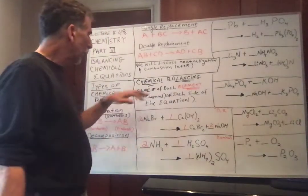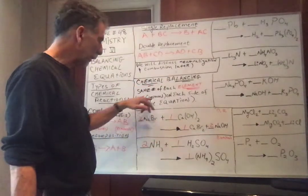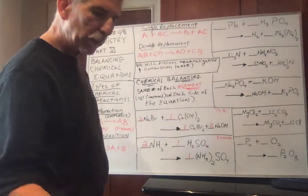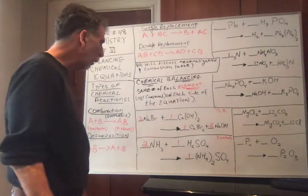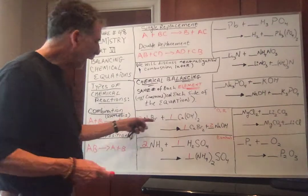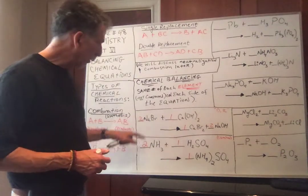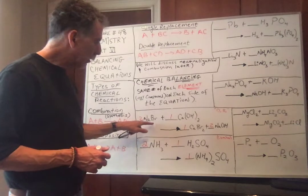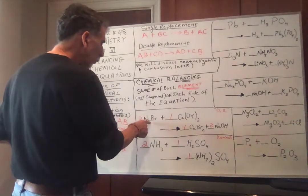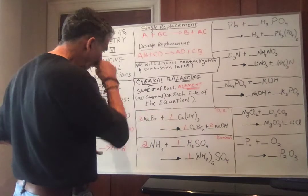We need the same number of each element on each side, not the compound. I've already balanced this one — let's name it. NaBr: metal, non-metal, sodium bromide. Group one, group seven, plus one, minus one. And Ca(OH)2 — calcium is in group 2A, so it has a charge of plus two. OH is the hydroxide ion with a charge of minus one. So calcium is plus two, hydroxide is minus one, so we need two hydroxides for one calcium. That's calcium hydroxide.